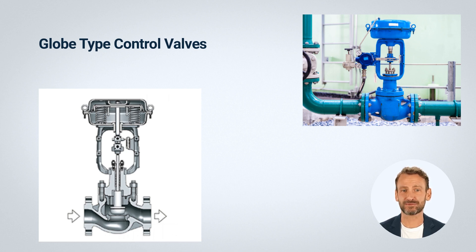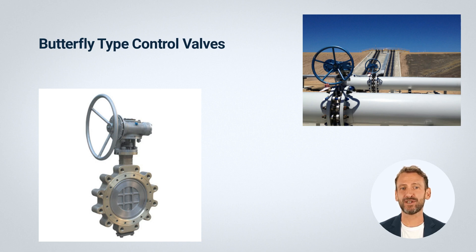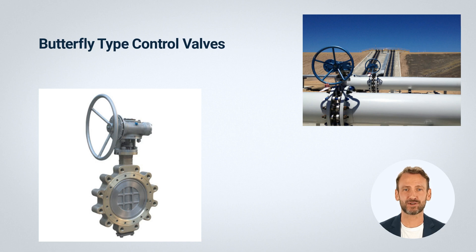Design: butterfly valves consist of a disc-shaped closure element mounted on a rotating shaft positioned in the center of the valve body. The valve body is typically made of cast iron, stainless steel, or other materials, and the disc can be made of metal, plastic, or other materials. Butterfly valves are designed for quick operation and can be opened or closed by rotating the disc through a quarter turn.